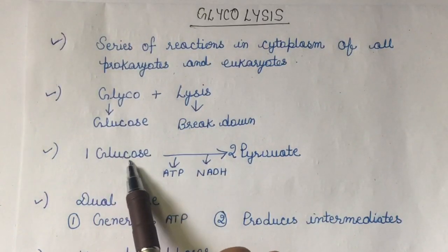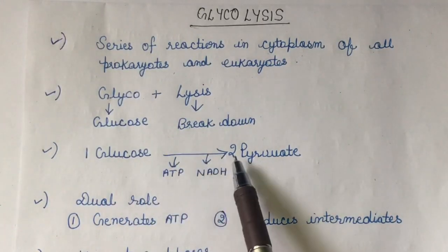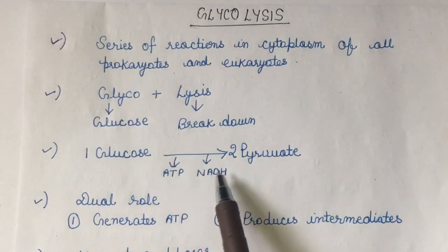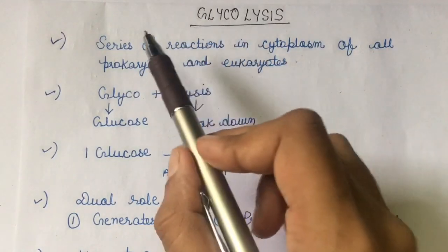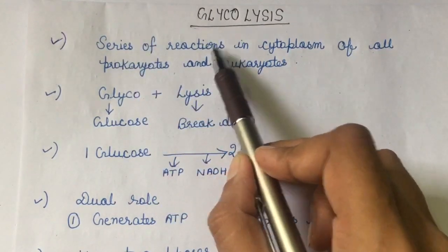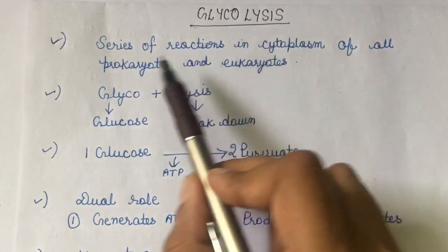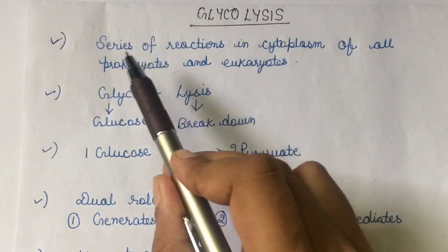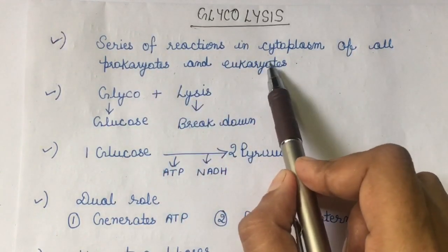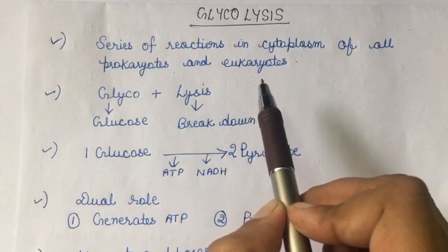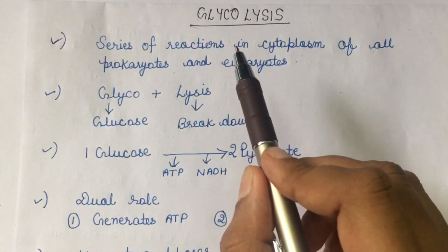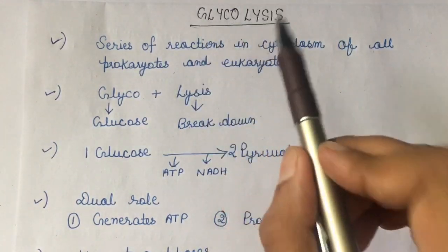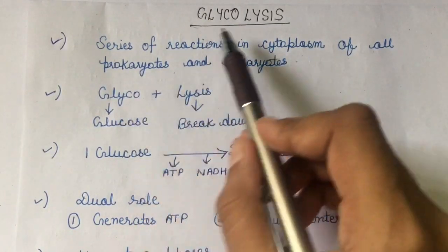When one molecule of glucose is broken down, it produces two molecules of pyruvate, and energy is produced in the form of ATP and NADH. This is basically a series of reactions occurring in the cytoplasm of all prokaryotes and eukaryotes. So the key point is it is present in both prokaryotes and eukaryotes, and glycolysis does not require oxygen at all. So many anaerobic organisms also have this process of glycolysis and break down their glucose with the help of this process.